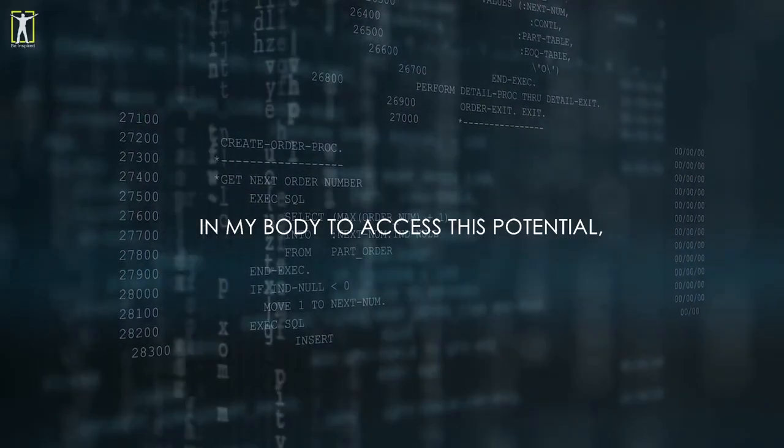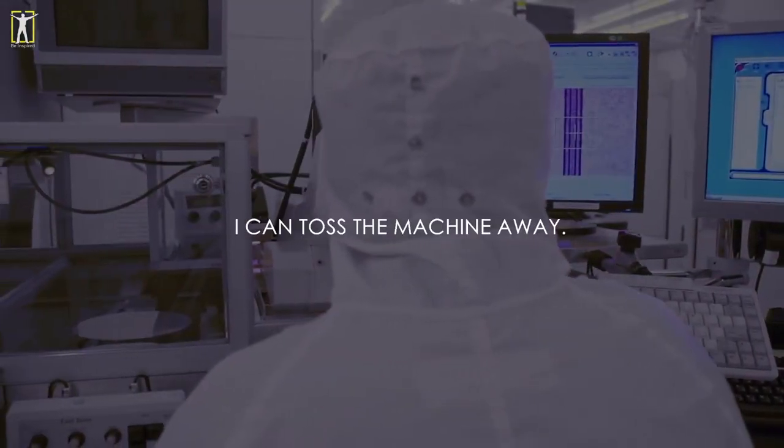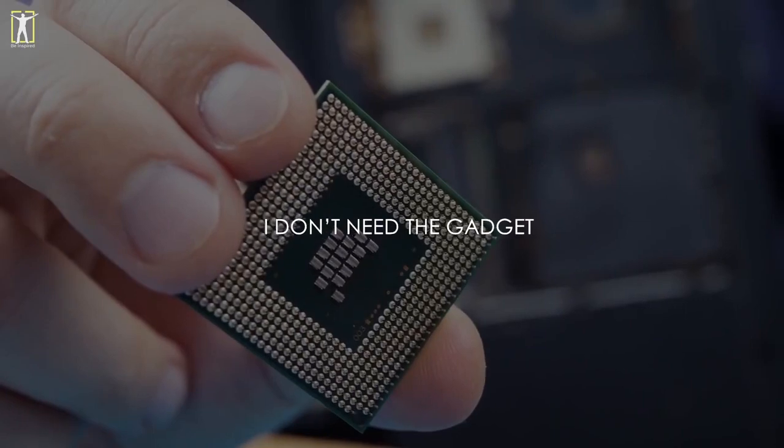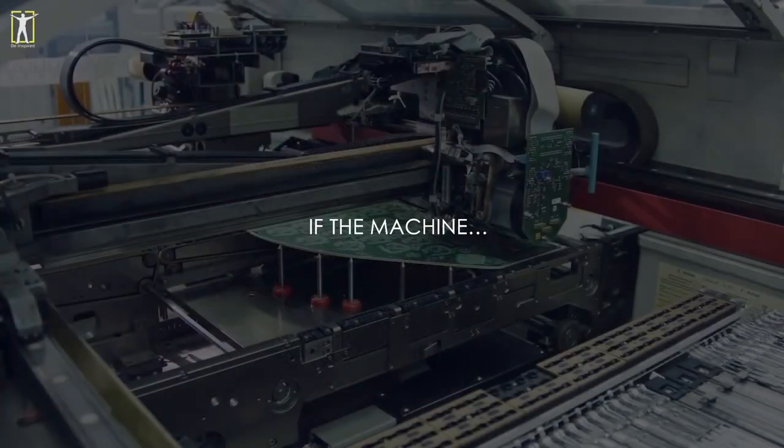If a machine can tell me when I'm creating the conditions in my body to access this potential, then that machine is very useful. Once I understand that, I can toss the machine. I don't need the gadget because now I know who I am.